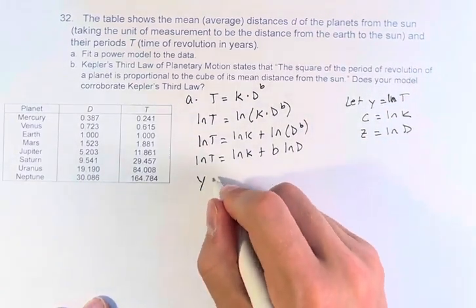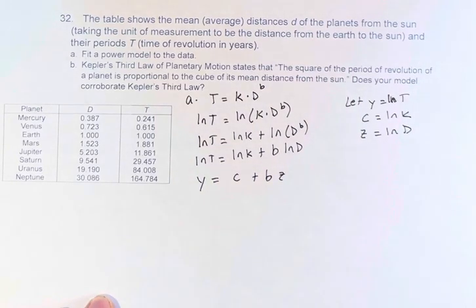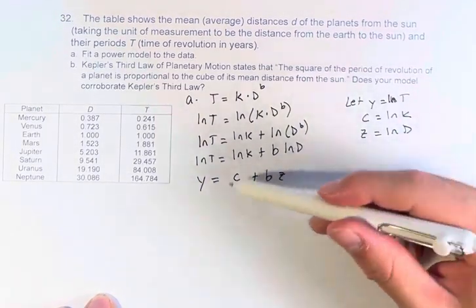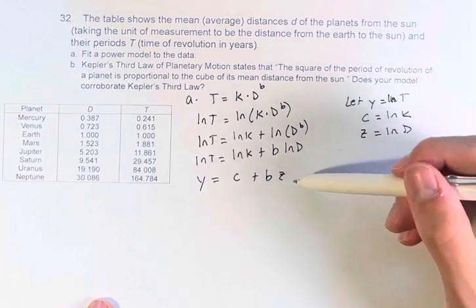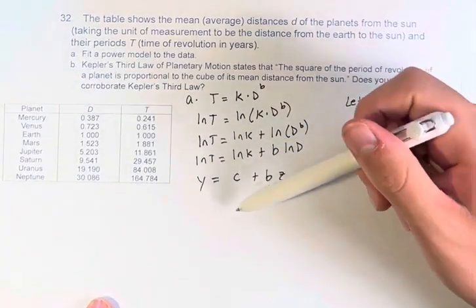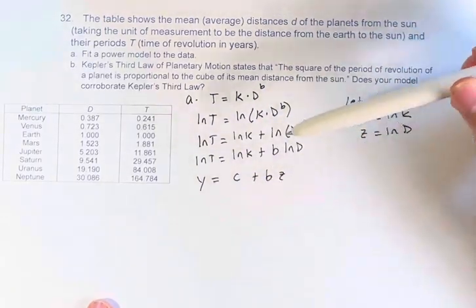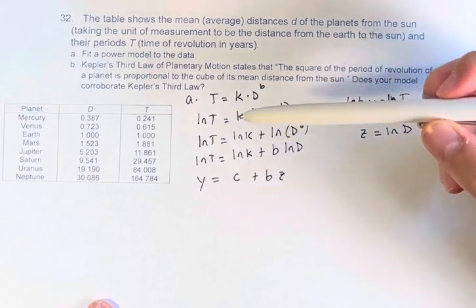Then we have y is equal to c plus bz. And here, you can see we just have a linear function, a function of z to model y. So we can do a linear regression. And you can do this on your calculator by putting in the points. You can do it on an online calculator.